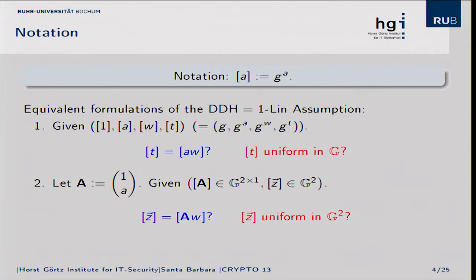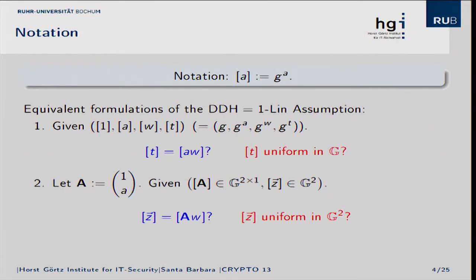I will use this bracket notation in this paper: A in brackets stands for G to the A. Somebody in the coffee break told me that this was his favorite part of the paper. This notation is extremely useful to highlight the algebraic structure of the assumptions that we will be studying. Bear in mind that A in brackets stands for G to the A.